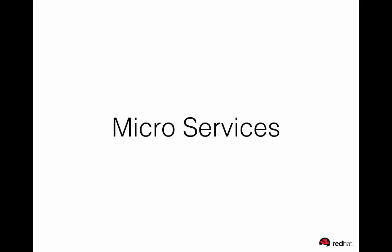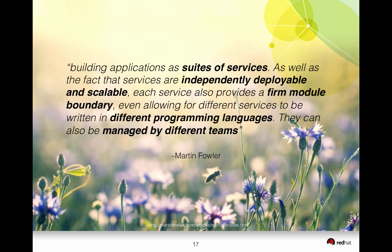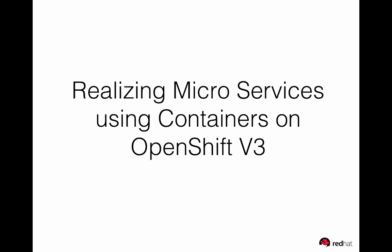To quickly define microservices, I'm using Martin Fowler's statement on how he defined them. Microservices are building applications as suites of smaller services — each service should be independently deployable, each service should scale independent of the other services it works with, each service has a firm module boundary that means it exposes specific interfaces so other services can depend on that boundary without worrying about side effects. Every service can be written in its own programming language, and each service can be managed by its own different team. These are generally considered the features of microservices, so how do we realize them using containers in OpenShift version 3?